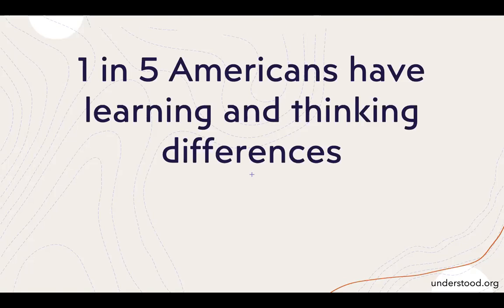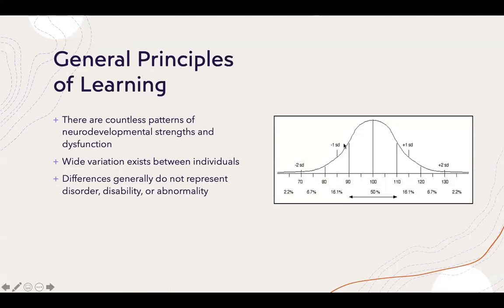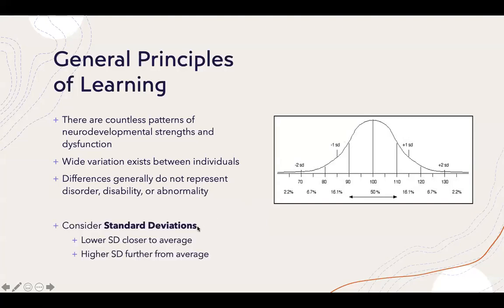It's when we start thinking about people further from the average that disorder or disability applies. On a bell curve, the middle represents average, and as we get further from the middle, we see more disorder, disability, or abnormality — those are higher standard deviations. This is helpful to keep in mind when viewing a psychological assessment, as standard deviations are often used to describe learning.